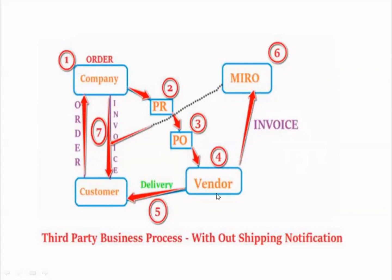This is called without shipping notification because whenever the vendor is delivering the product to the customer, he will not intimate or update us. After delivering the goods to the customer, he directly raises an invoice to us. During the delivery time, he will not update us — like saying 'I am sending these goods to this customer as per your order.' After delivering the goods, he raises the invoice to the company. Once we receive that invoice, we raise a billing document invoice to the customer. This is the business process of third party without shipping notification.